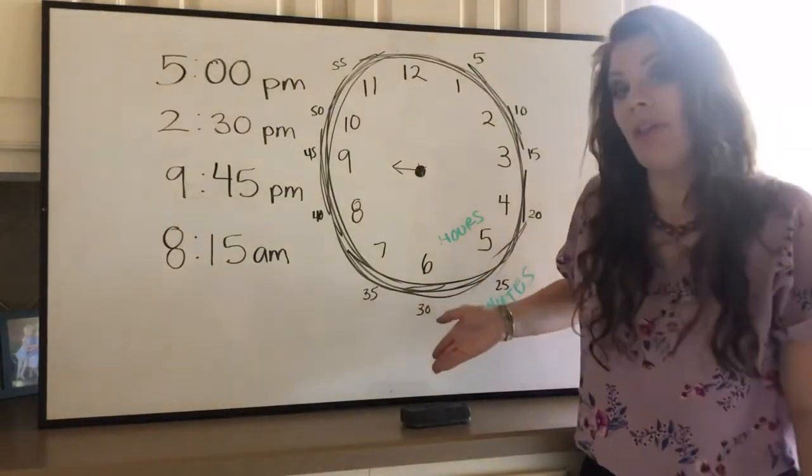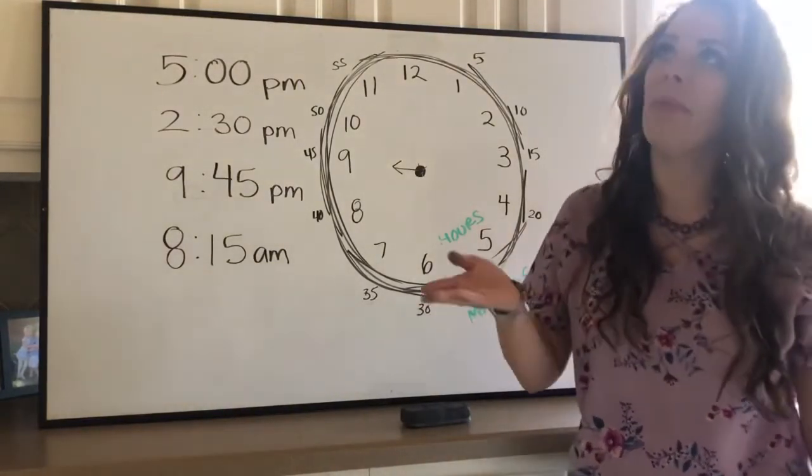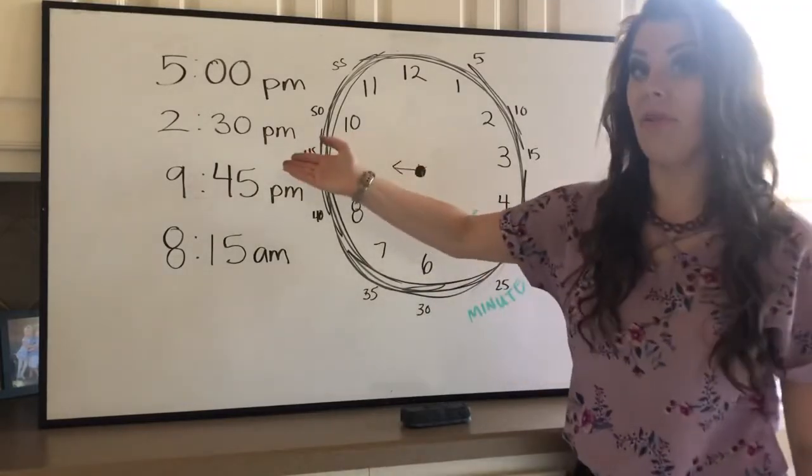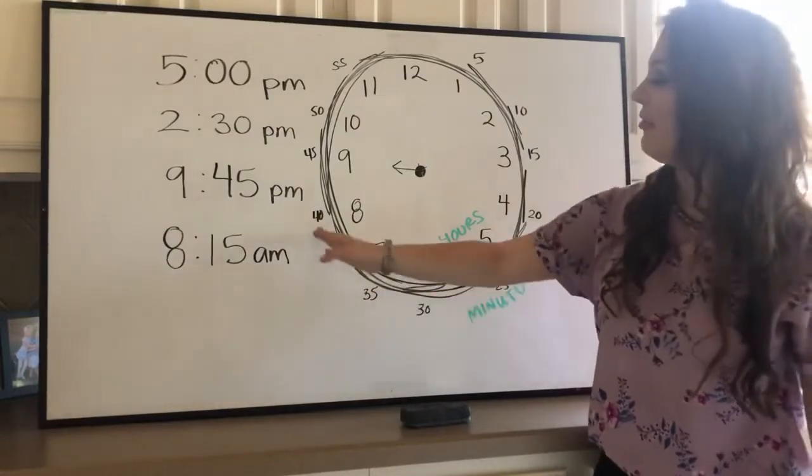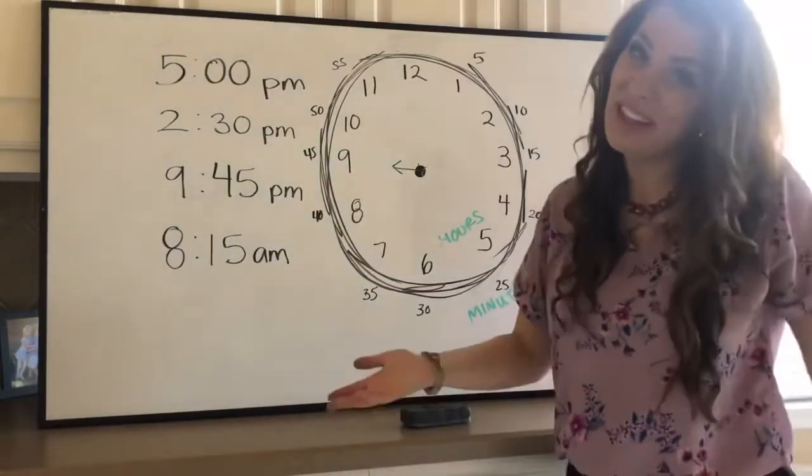So if I know I'm looking for a 45 on my clock, I can just start down here at the six and count 30, 35, 40, 45. That makes a lot of sense.